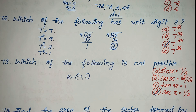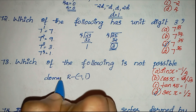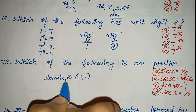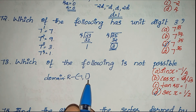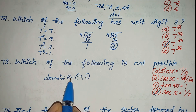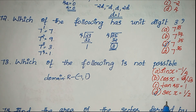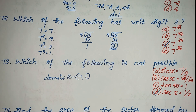The sine function has x values where the range is the interval minus 1 to 1. The value 1/2 is within this interval, so it is achievable. However, the value in option D falls outside the range minus 1 to 1, making it not possible.